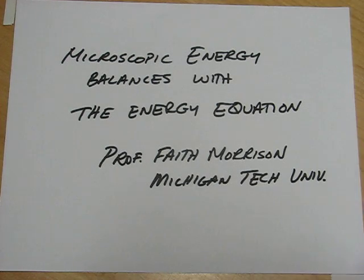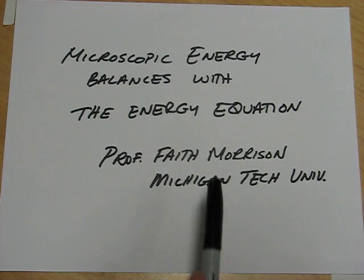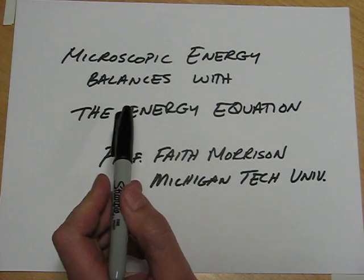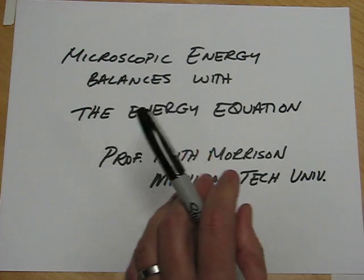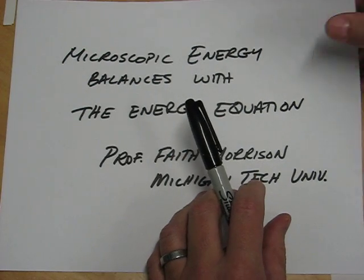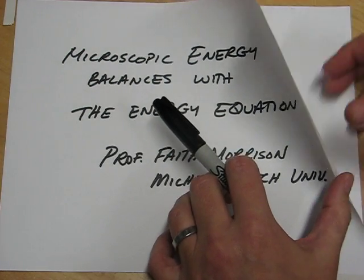I have been asked to do a problem using the microscopic energy balances, in particular an example starting with the energy equation. So I'd like to start with a very simple problem. This is a problem with heat conduction in a slab.